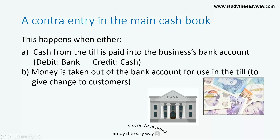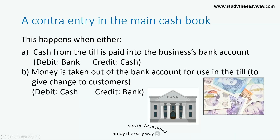Or, money is taken out of the bank account for use in the till, in order to give change to customers. The double entry for this is to debit cash — in other words, to increase the amount of money in the cash account — and to credit the bank account, meaning that there is a decrease in the amount of money in the bank.